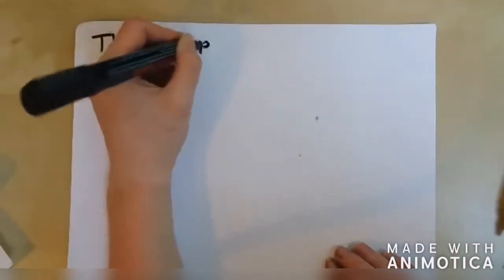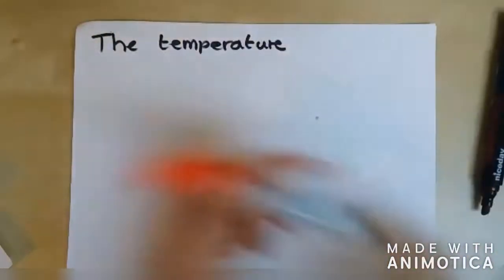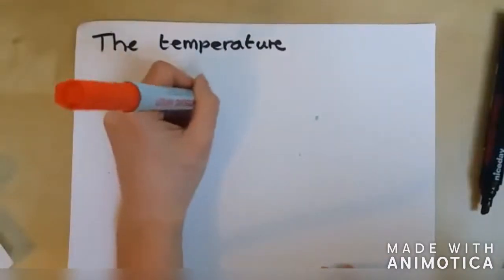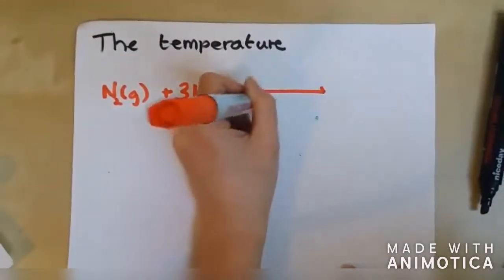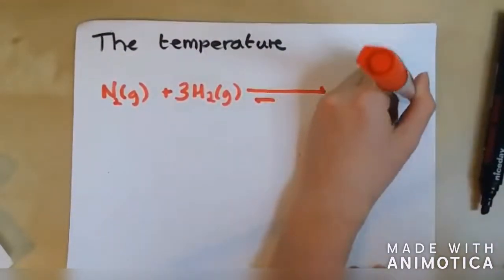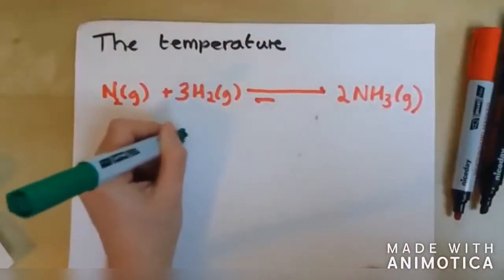The temperature. Chemists need to shift the position of the equilibrium as far right as possible in order to maximize the ammonia production. The forward reaction is exothermic, so according to Le Chatelier's principle, it will be favored if you lower the temperature.